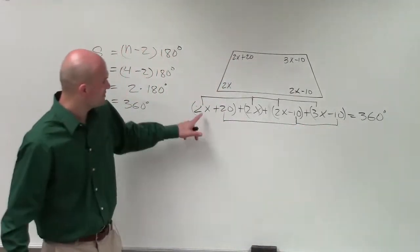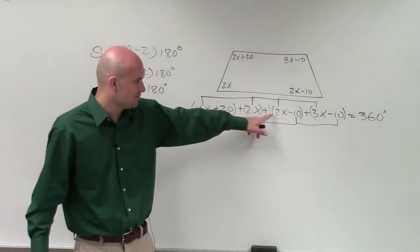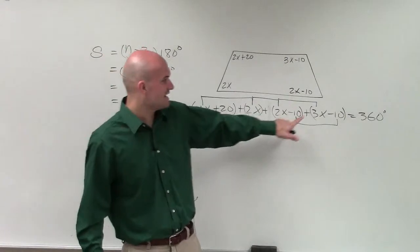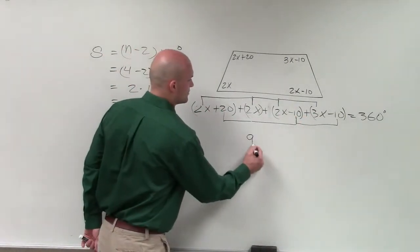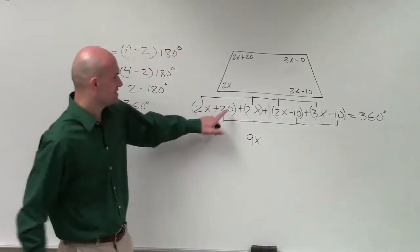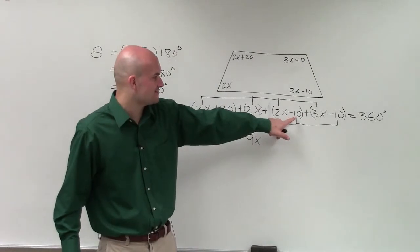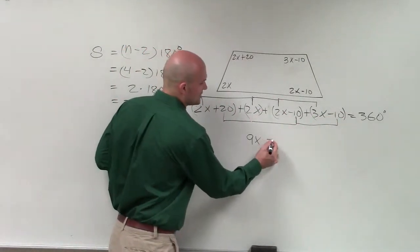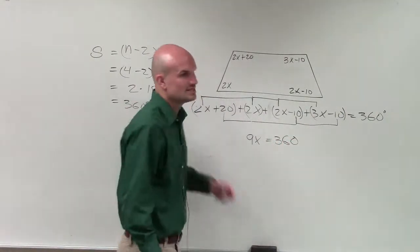All right, so here what I have is 2x plus 2x plus 2x plus 3x. So that's 2, 4, 6, 9x. And then I have positive 20 minus 10 is positive 10 minus another 10 is 0. So it's really just 9x equals 360.